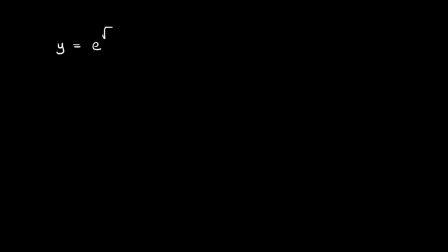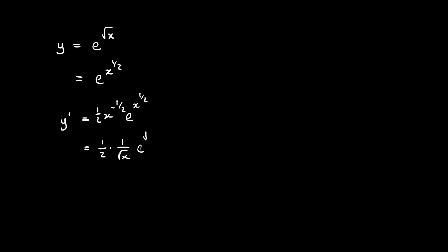Let's say we've got y is equal to e to the power of the square root of x. Before we differentiate this, it's helpful to rewrite the power as x to the power of a half. Then we can differentiate it the normal way. We get e to the power of x to the power of a half, and differentiating x to the power of a half gives us a half x to the power of negative a half. So simplified, that's a half times 1 over the square root of x, times e to the power of the square root of x.